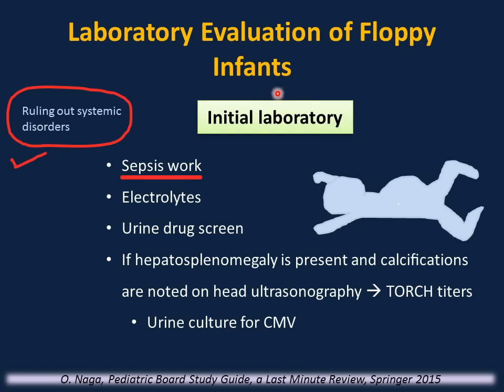Initial laboratory evaluation in cases of hypotonia is to rule out systemic disorders. If you have a newborn lying limply with little movement, it is essential to rule out sepsis. Order electrolytes including calcium and magnesium, urine, and drug screen. If hepatosplenomegaly is present and you see calcifications on head ultrasound, TORCH titers are important to rule out toxoplasma, rubella, cytomegalovirus, and herpes infection. Urine culture for CMV is also important; CMV can cause microcephaly. If the hypotonia is considered central, evaluate for genetic and metabolic causes.